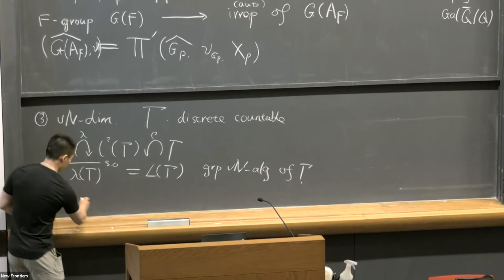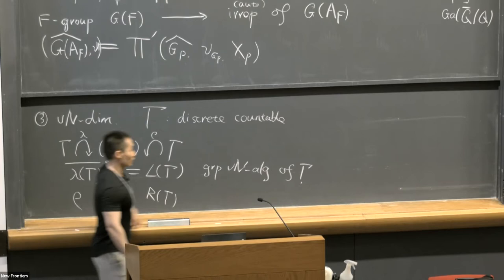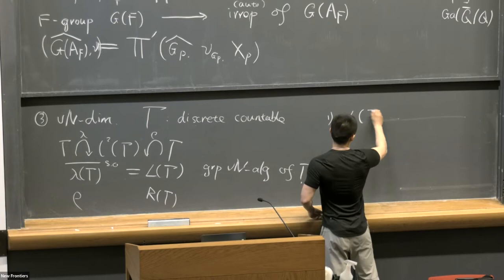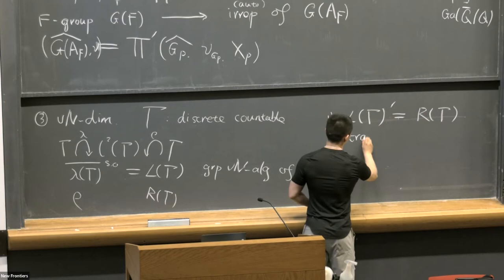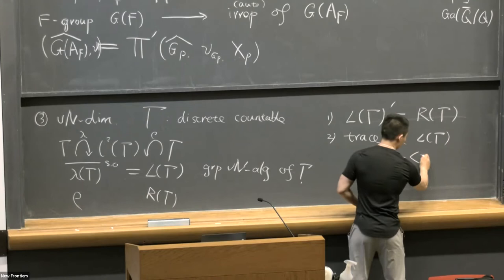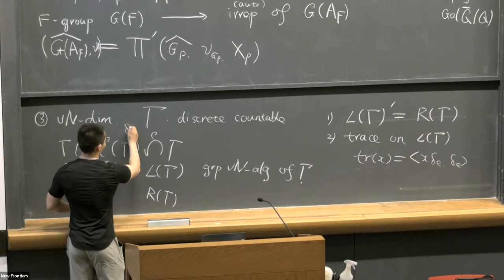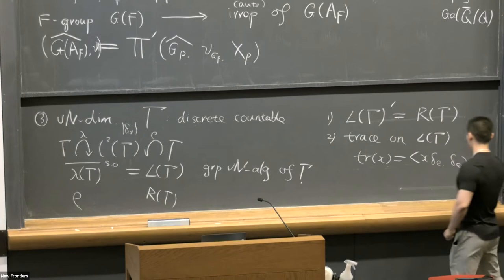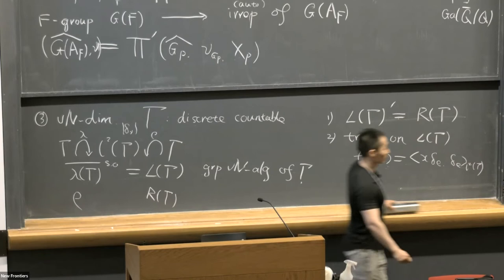Let's consider the image of the left regular representation of gamma. If we take the strong operator closure of this image, that is the so-called definition of the group von Neumann algebra of gamma. You can also define this from the right regular representation, and you get another algebra—also the group von Neumann algebra. They are isomorphic. There are two things I should mention: the commutant of this algebra is the one you get from the right regular representation. Second, there is a natural trace on this algebra, defined by trace(X) equals the inner product of X with delta_e.